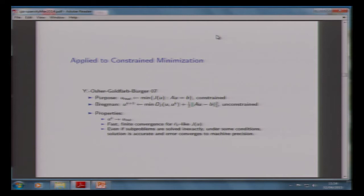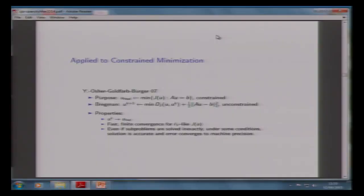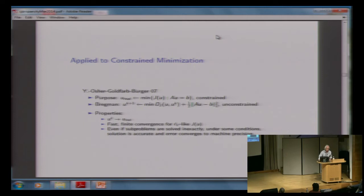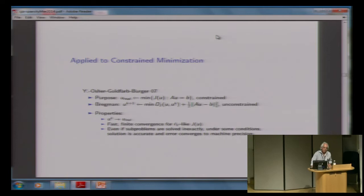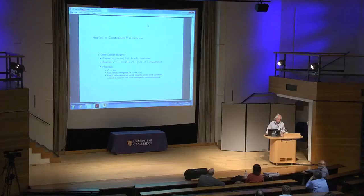Here's an important point. Every step of the game when you solve this problem, you are solving an unconstrained problem to get the constrained solution. And if the subproblems are solved inexactly, the solution is still accurate — you don't have to solve those linear equations exactly. Only a few iterations work, and there's a reason for that: there's something called error forgetting. This is a method which forgives and forgets errors — life should be that way. You can make mistakes in every iteration and at the end, you're on the money.